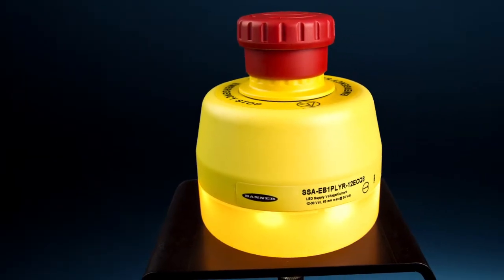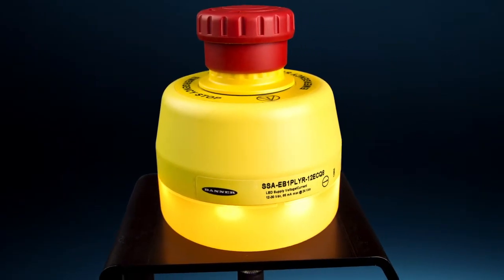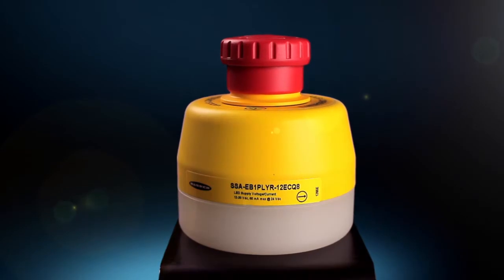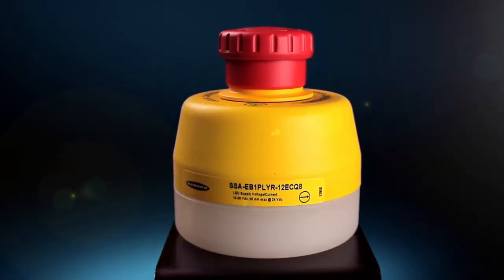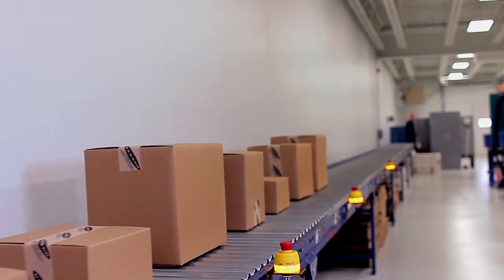The illuminated e-stop enclosure provides indication of an armed button, an actuated button, and an optional system status for visual emergency stop indication.